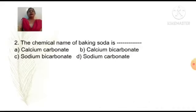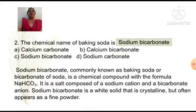The chemical name of baking soda is: Option A calcium carbonate, Option B calcium bicarbonate, Option C sodium bicarbonate, Option D sodium carbonate. Answer is Option C sodium bicarbonate. Sodium bicarbonate commonly known as baking soda or bicarbonate of soda is a chemical compound with the formula NaHCO3. It is a salt composed of a sodium cation and a bicarbonate anion. Sodium bicarbonate is a white solid that is crystalline but often appears as a fine powder.